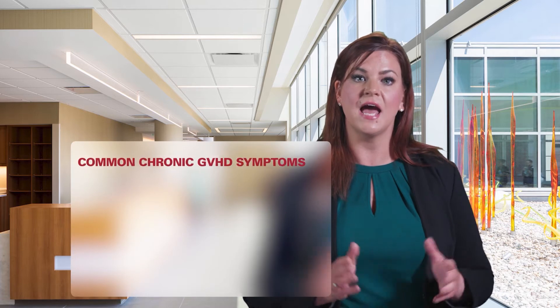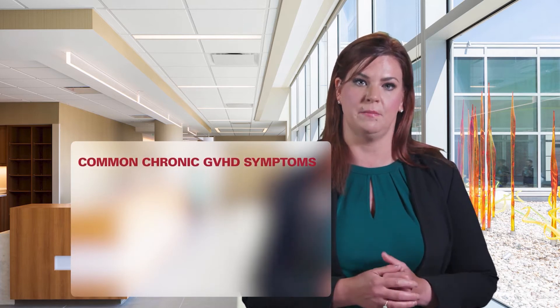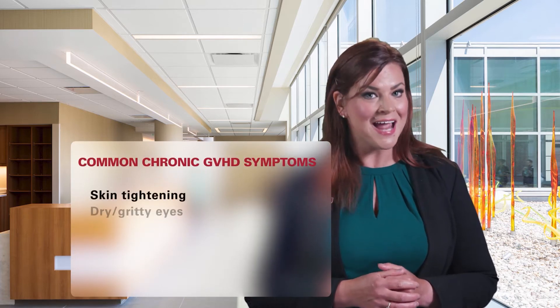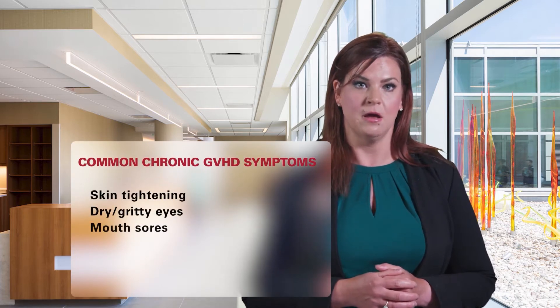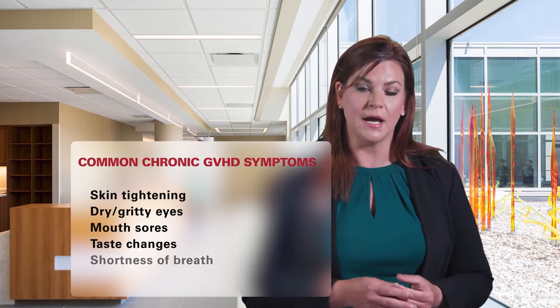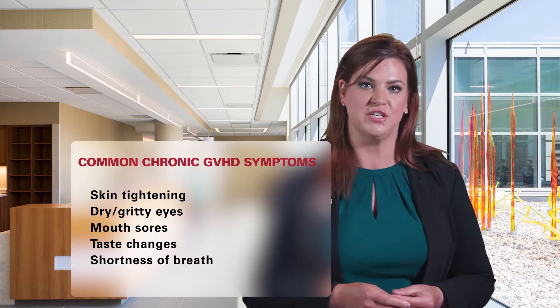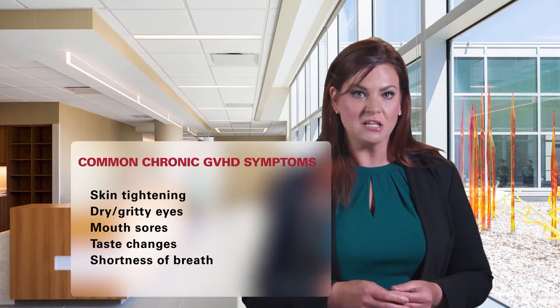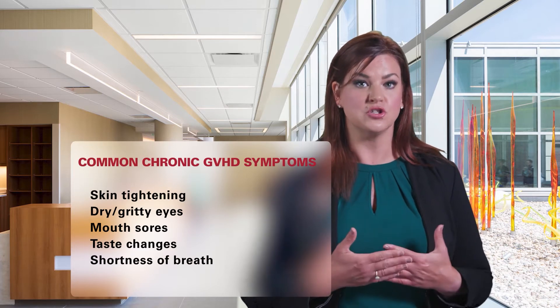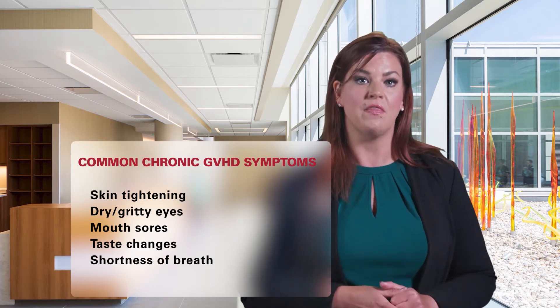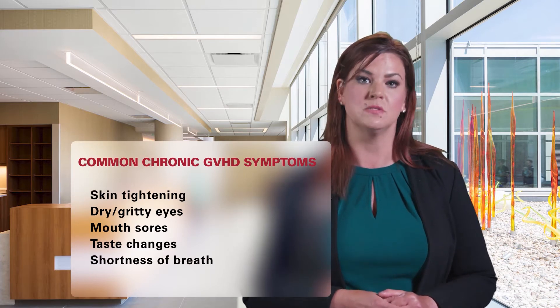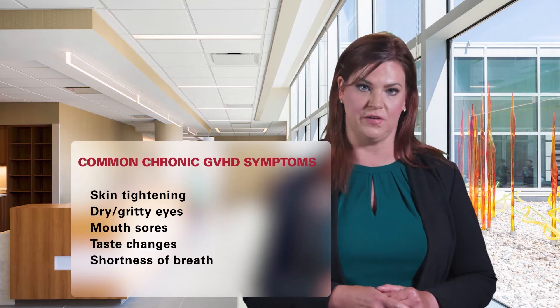Chronic GVHD can appear more gradually and can affect any organ system. Skin tightening or hardening, dry gritty eyes, mouth sores or taste changes, and lung changes resulting in shortness of breath are common forms of chronic GVHD.